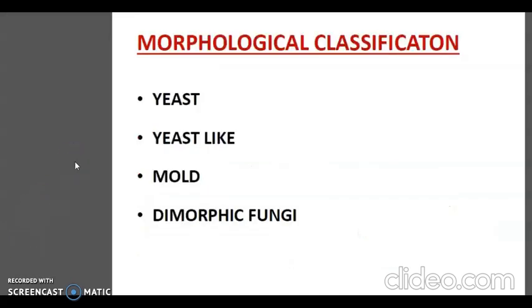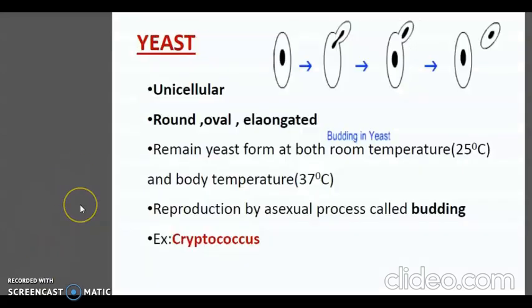Depending on cell morphology, fungi can be divided into four classes: yeast, yeast-like fungi, molds and dimorphic fungi. Yeasts are unicellular fungi which occur as spherical or ellipsoidal cells and reproduce by simple budding. On culture, they form smooth creamy colonies. The only pathogenic yeast is Cryptococcus neoformans.